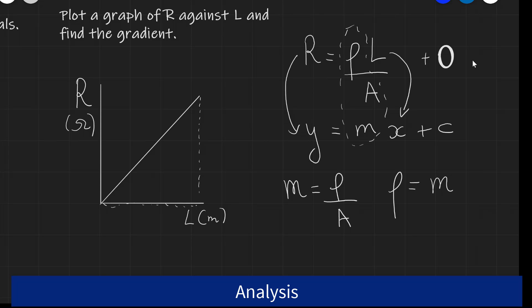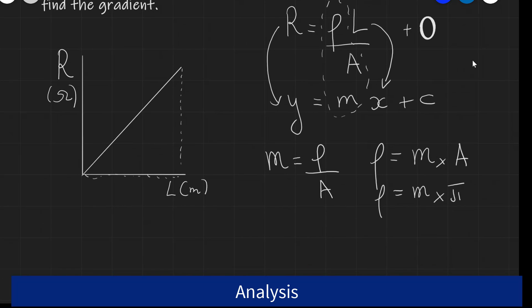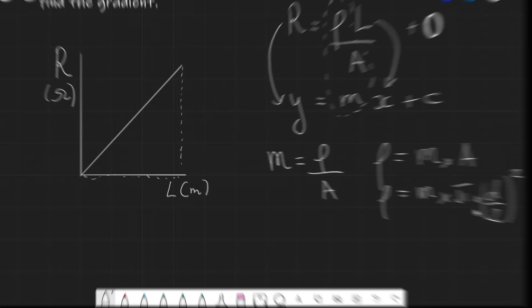If I want to be really precise, remember we have actually measured the diameter of the wire, so the resistivity will be equal to M times pi multiplied by D over 2 squared, because this is the formula for the area of a circle.